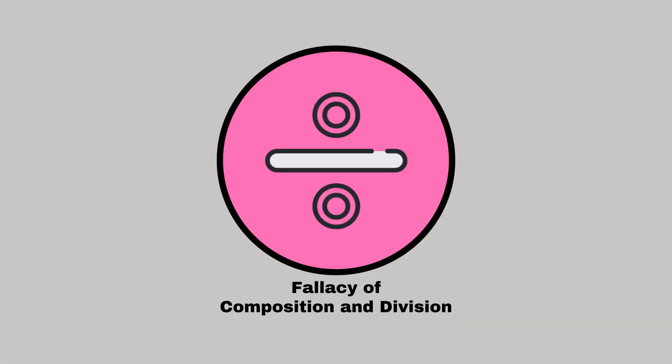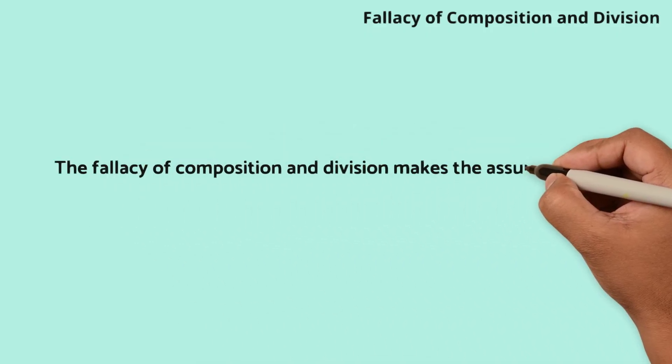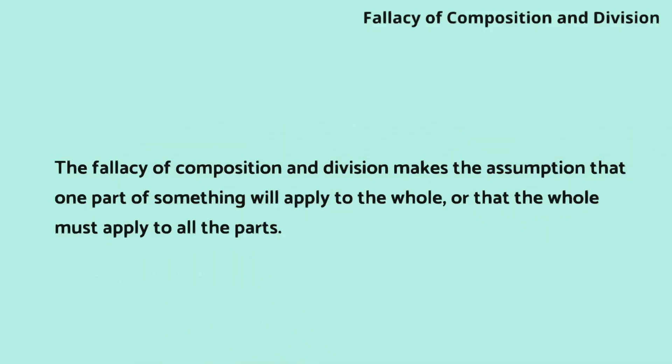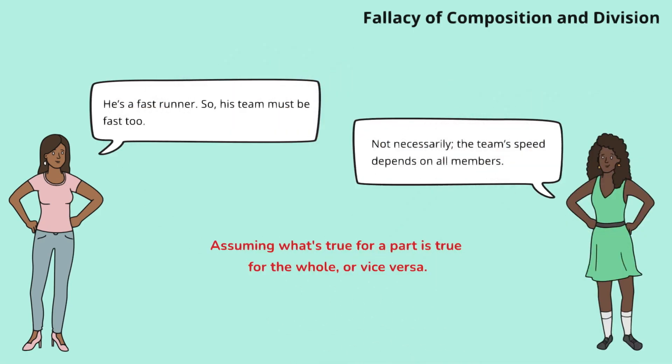Fallacy of composition and division. This fallacy makes the assumption that one part of something will apply to the whole, or that the whole must apply to all the parts. Claire mistakenly assumes what's true for a part is true for the whole. Leah points out this error, illustrating the dangers of overgeneralization in both directions.